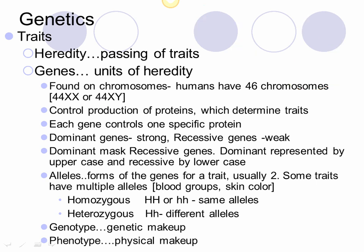These genes control the production of proteins, and it's these proteins which actually determine traits. Every gene controls one specific protein. Some genes are extremely strong — we call them dominant genes. Others which are not strong are called recessive genes. When a dominant gene is present with a recessive gene, it will always mask the recessive gene — it doesn't allow the recessive gene to be expressed. The dominant gene will always suppress or mask it.